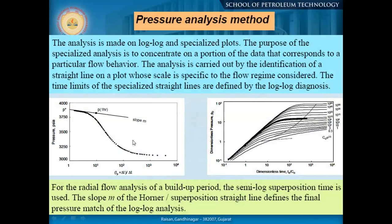The formulation has two parts: the left side is the Horner plot and the right side is type curve matching. The analysis is made on log-log and semi-specialized plots. The purpose of the specialized analysis is to concentrate on a portion of data that corresponds to a particular flow behavior. The analysis is carried out by identification of a straight line on a plot whose scale is specific to the flow regime considered. The time limits of a specialized straight line are identified by the log-log diagnostic plot.